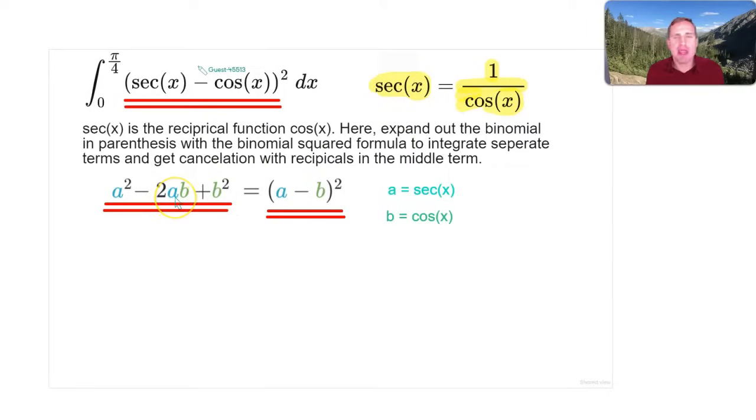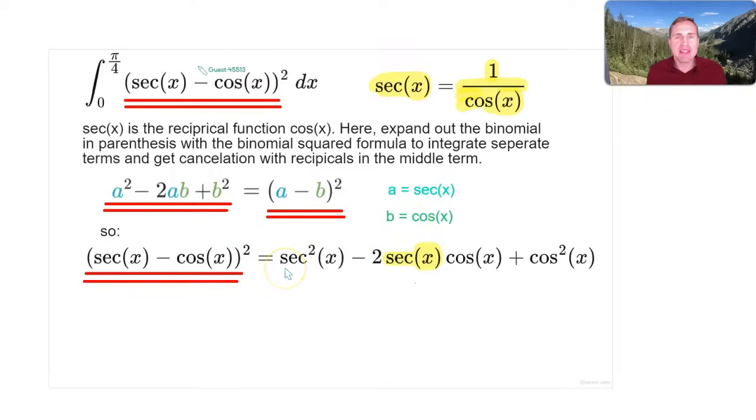So recall from your algebra classes that if you have (a - b)², that ends up calculating out to using FOIL—remember FOIL is first, outer, inner, last—a² - 2ab + b². And the -2ab comes from the fact that the outer term and the inner term are both the same, so they double up with a factor of 2.